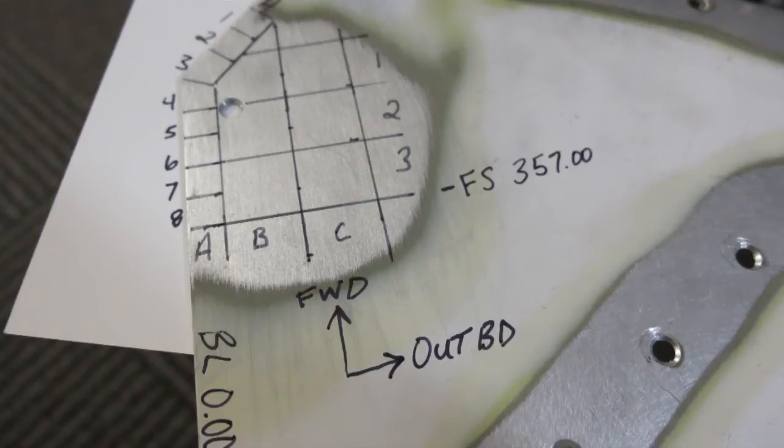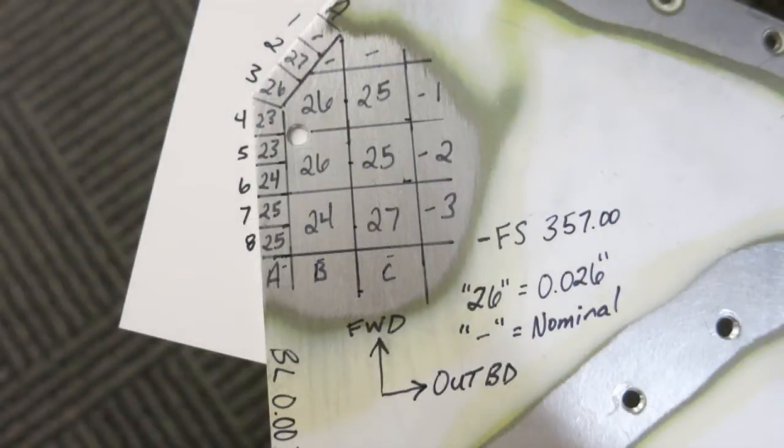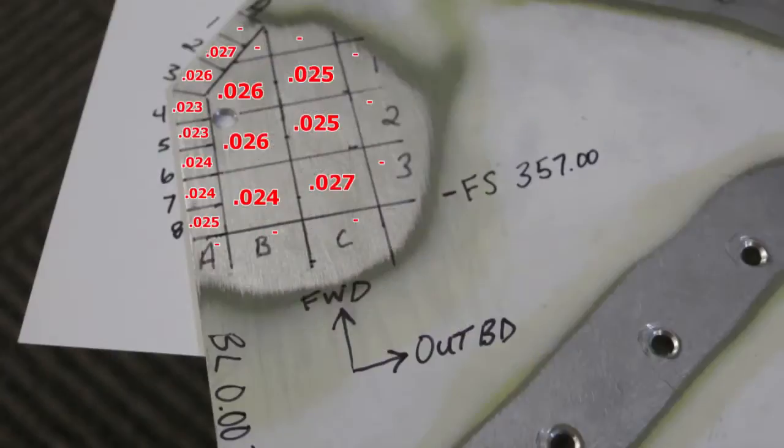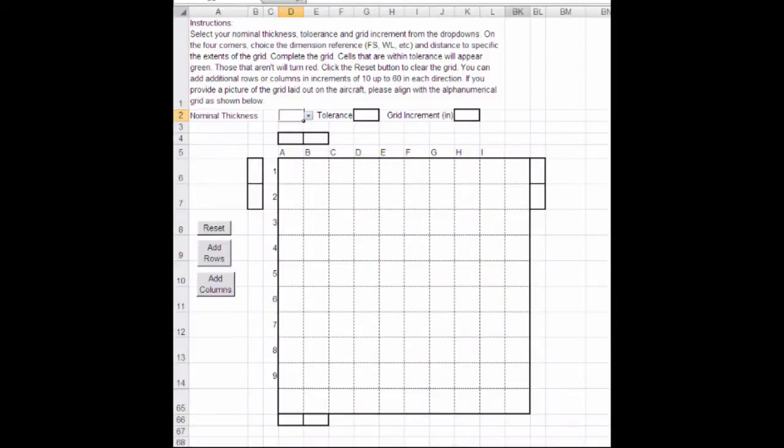Once the grid is complete, your authorized NDT facility can measure the remaining skin thickness. The readings can be written in the squares with a marker, typed into the squares with photo editing software, or the map could be transferred to spreadsheet software.